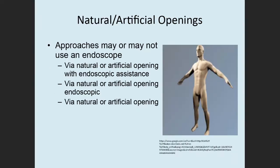First, let's look at approaches through a natural or artificial opening. Natural openings include orifices in the body — the ears, mouth, nose, anus, and in a female, the vagina and urethra. There are three approaches that use natural or artificial openings: the natural artificial opening with endoscopic assistance, the natural artificial opening endoscopic, and the natural artificial opening.